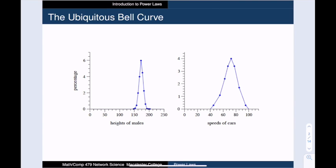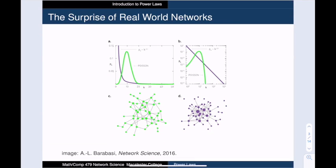So you can imagine the surprise when researchers started looking at the degree distributions for real-world networks. Instead of seeing a nice bell-shaped curve, like this green one, they instead saw this purple curve.